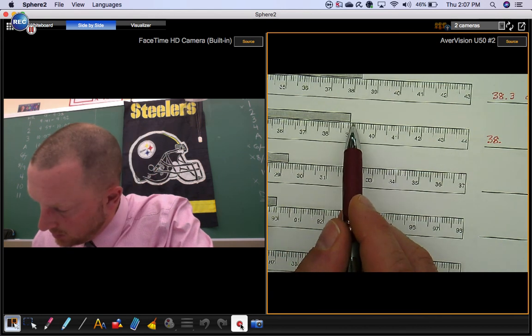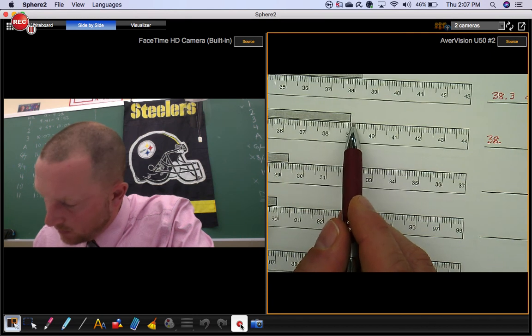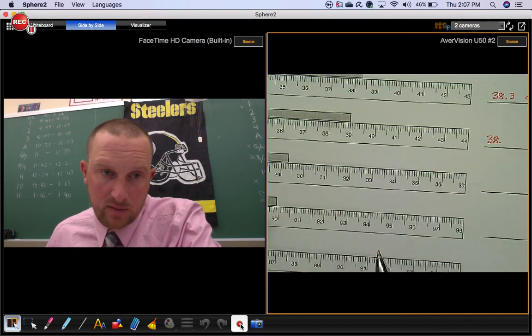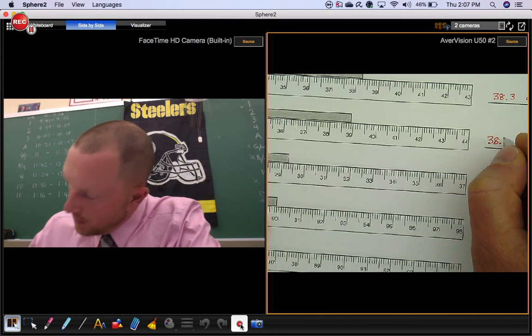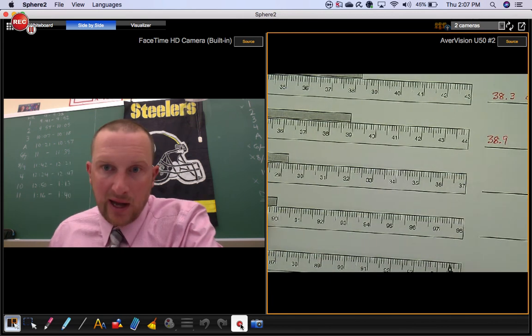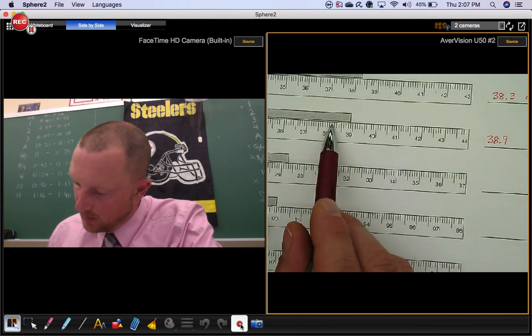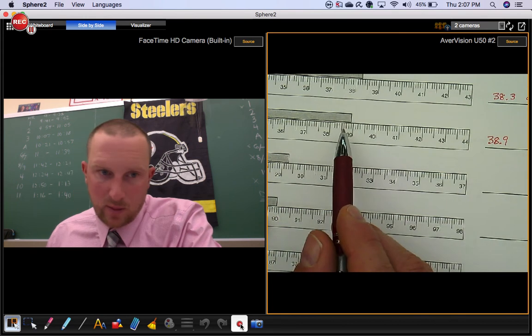This would be one little space away from being 39 full centimeters. So 38.9 is what you could have. You could count the nine little spaces or just count backwards one.